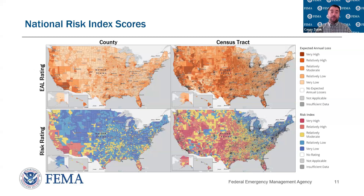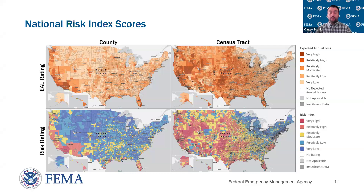Once we put everything together, the top rows show expected annual loss ratings — the annualized losses for a hazard in a given location on average each year, measured in U.S. dollars. The left column is by county, the right is by census tract — the darker the orange, the higher the expected annual loss. The bottom row shows the risk rating — what happens when we apply social vulnerability and community resilience factors. The darker the red, the higher the relative risk; the darker the blue, the lower. Areas in the southern and western portions of the country have higher relative risk, while the northeast is more resilient.